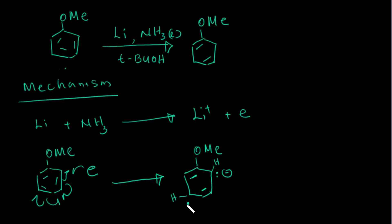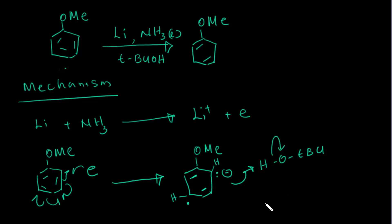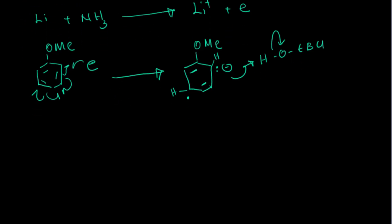Now we have the radical anion. In our system we also have a proton source — tert-butanol, though another alcohol can be used. The radical anion grabs a hydrogen from the tert-butanol (proton source), and after this protonation step we now have a radical.